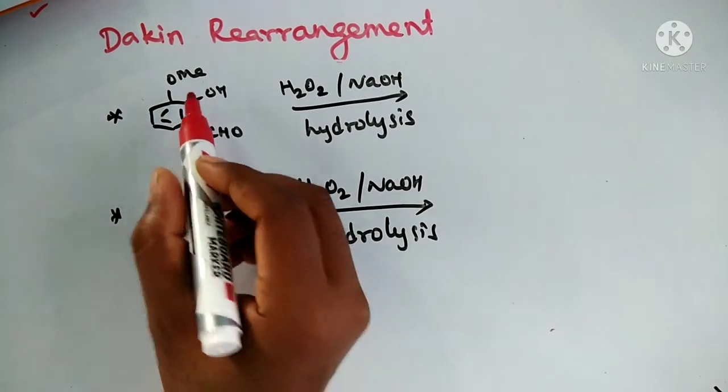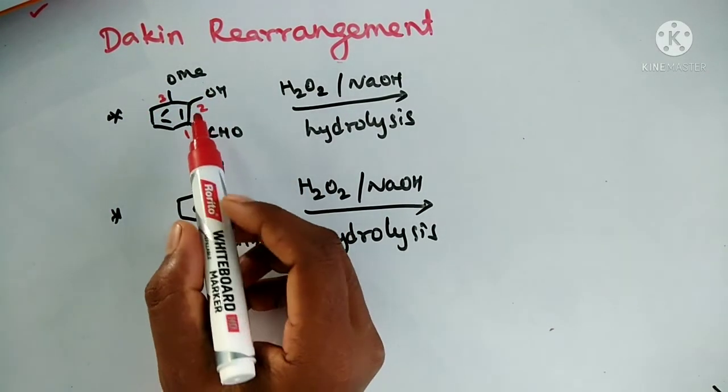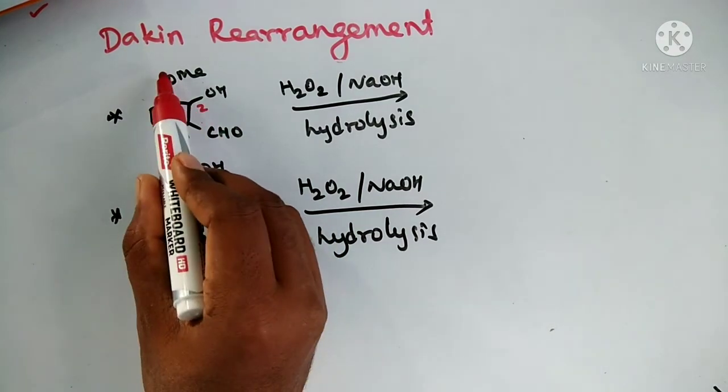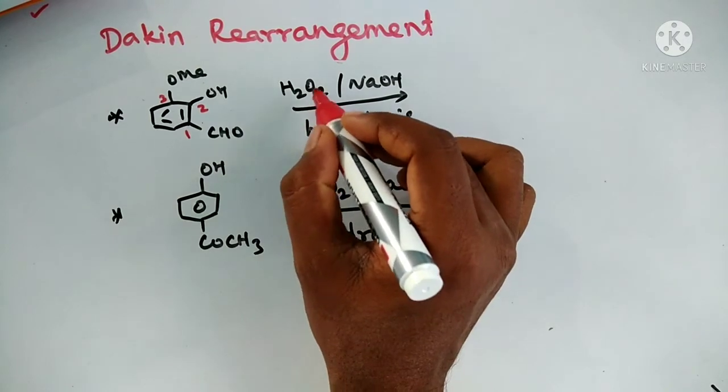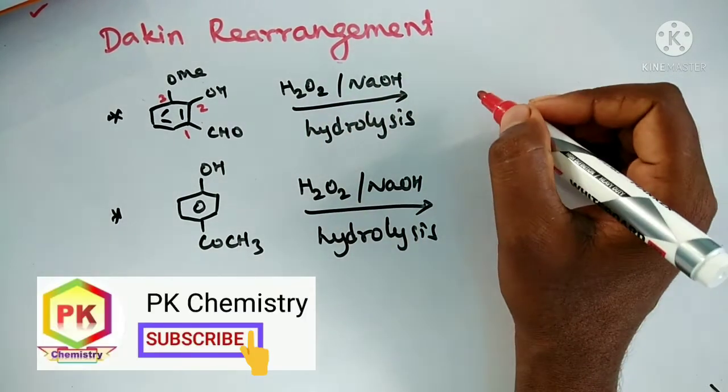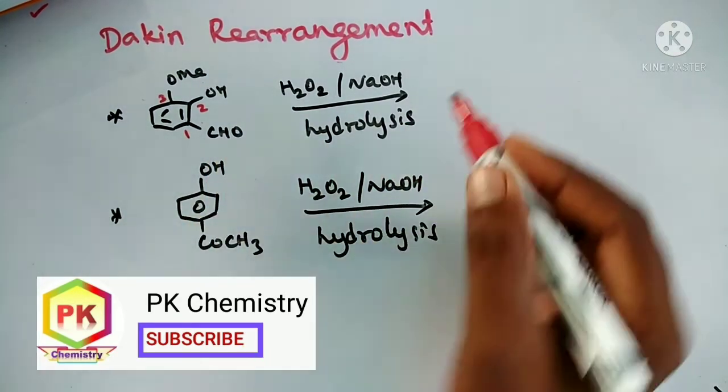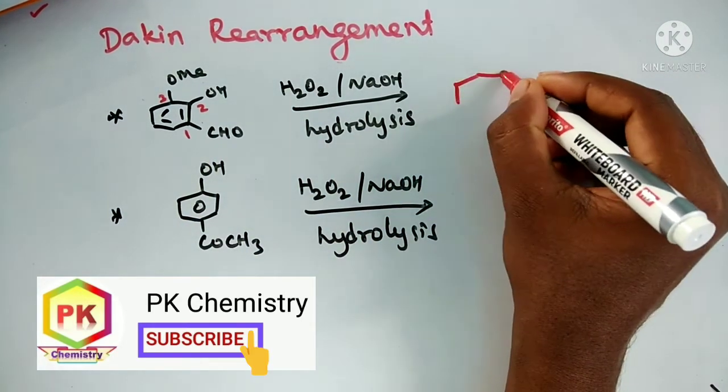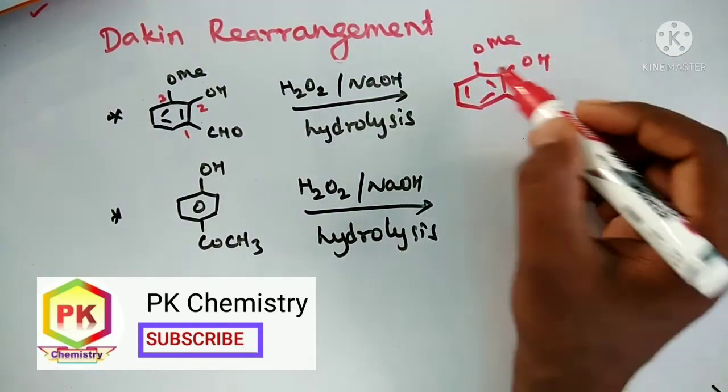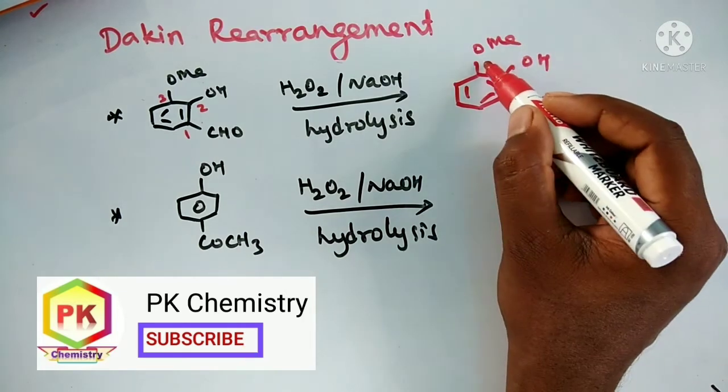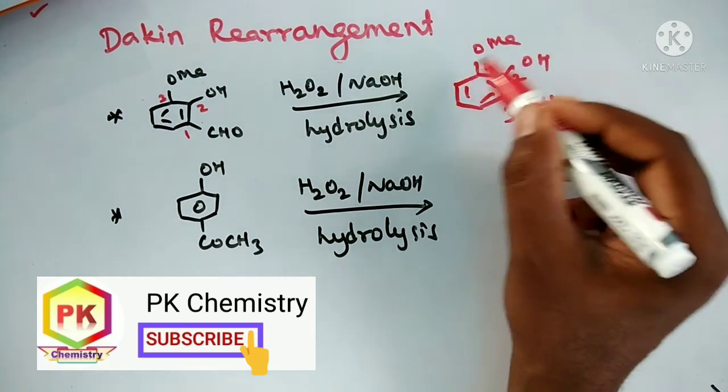One, two, three. So 2,3-dihydroxy-3-methoxybenzaldehyde in the presence of hydrogen peroxide, sodium hydroxide, followed by hydrolysis. What will happen? Aldehyde converted into alcohol. You will get a hydroxy quinone. And again you name this: 1, 2, 3. So 2,3-dihydroxy anisole.